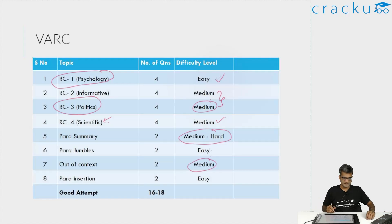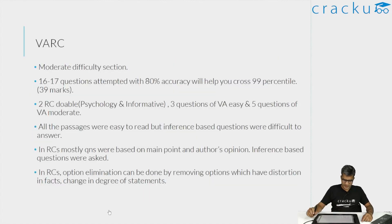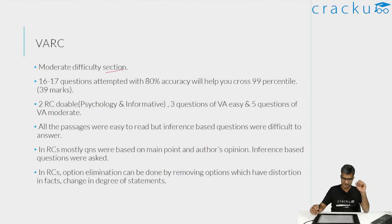The para-insertion was easy again. I knew that I was getting them correct after I attempted them — you can easily figure out where the para that is supposed to be inserted will come in the overall paragraph. Overall, I think this is a moderate difficulty level section. The passages were easy to read, but in some of the RCs the questions were very difficult — inference-based. Even if you understood the passage, actually solving those individual questions was difficult.